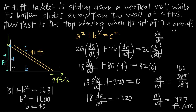The negative number tells us that the rate of change of a with respect to time is negative, meaning this length a is getting smaller over time. Of course that makes sense, because the ladder is sliding down the wall, so this distance gets smaller and smaller until the ladder hits the ground. So when the top of the ladder is 9 feet off the ground, it is falling at a rate of 17.7 feet per second.